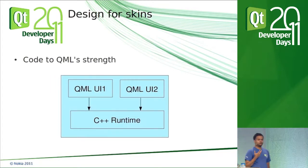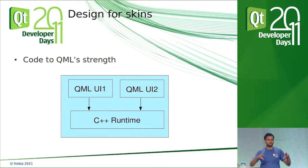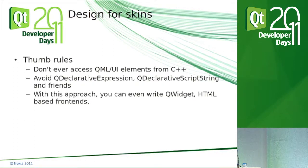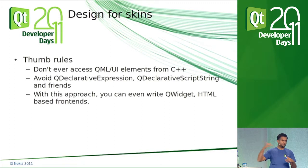When you code UIs this way, you are coding to QML's strength. QML's main strength is making graphical user interfaces really simple to write. Using this approach — all data and back-end stuff in C++ — you can write multiple user interfaces running on the same runtime. Don't ever access QML user interface stuff from C++. QML has C++ classes like QDeclarativeExpression and QDeclarativeScriptString that help you manipulate and find QML objects from C++. Don't use them. The only reason you should ever use them is for UI testing and automation.